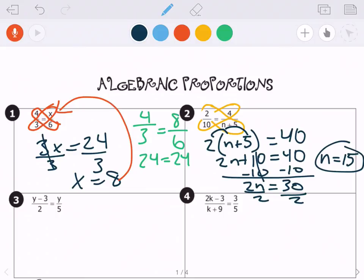If you plugged 15 in for the n and checked your work, you should get the same thing on both sides. Moving down to number 3. We're going to do the same thing. We're going to cross-multiply.